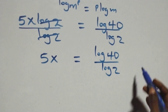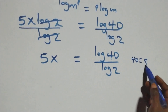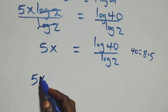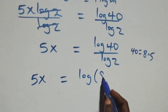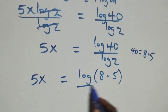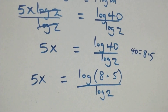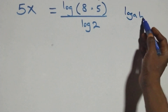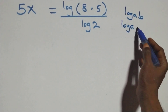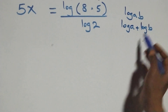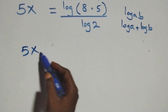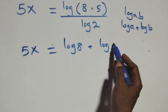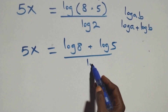What we have here: 40 can be written as 8 times 5. So 5x equals log(8 times 5) over log 2. This follows the law of logarithm: when we have log(a times b), this is the same thing as log a plus log b.